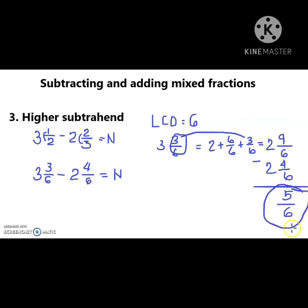And so ang answer natin is 5 over 6. So 3 and a half minus 2 and 2 thirds is 5 over 6.